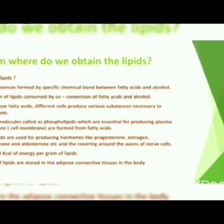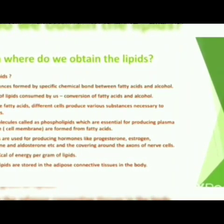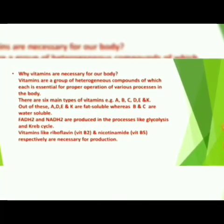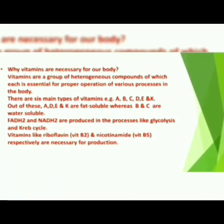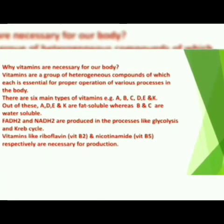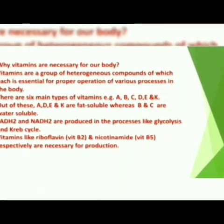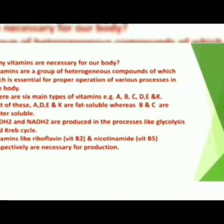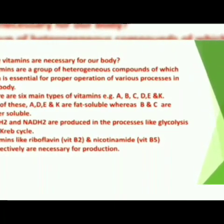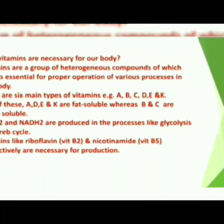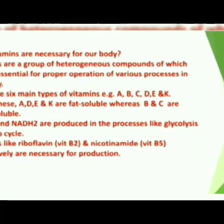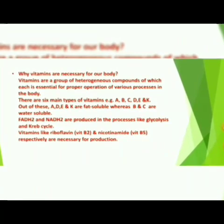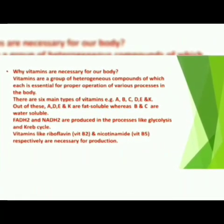Vitamins are a group of heterogeneous compounds essential for proper operation of various body processes. There are 6 main types: A, B, C, D, E, and K. Vitamins A, D, E, and K are fat-soluble; B and C are water-soluble. FADH2 and NADH2 are produced in glycolysis and the Krebs cycle. Vitamins like riboflavin (B2) and nicotinamide (B5) are necessary for their production.